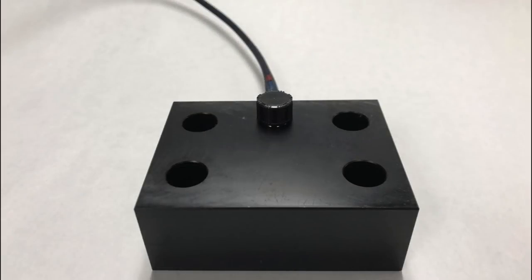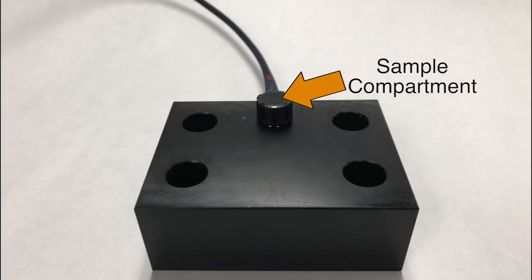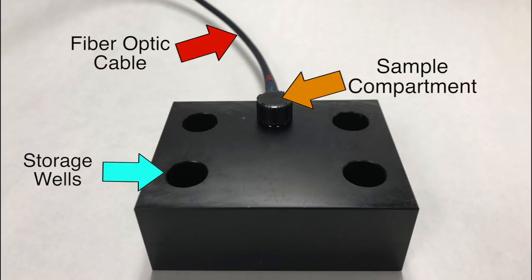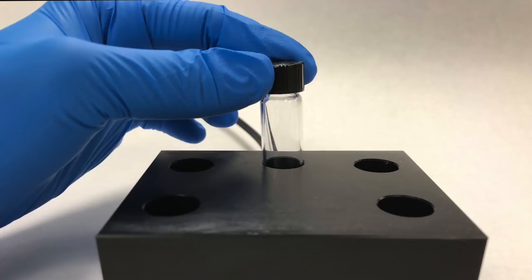The vial block you are using has one sample compartment and four additional wells to store other samples. Be sure not to move the vial block from its position as bending or stretching the fiber optic cables could break them. When you are ready to run a sample, wipe off the exterior of the vial with a kimwipe and place it into the sample compartment.